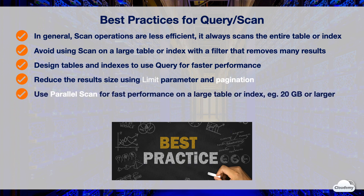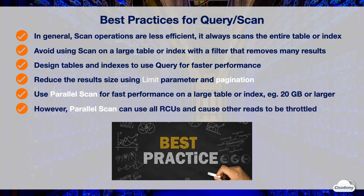When you need to scan a large table or index, you can leverage parallel scan to allow workers to scan multiple segments in parallel. Parallel scan might be a good option if you need to scan a table or index that is 20 gigabytes or larger, as you can leverage unused RCUs. However, parallel scan can use up all of the table's RCUs, potentially throttling other applications that need to access the table. You should avoid using parallel scan on a table or index that has mission-critical applications sharing the RCUs.